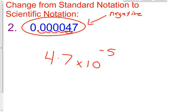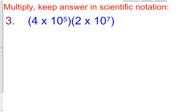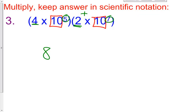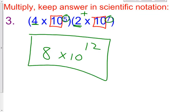Hopefully that helps for the next three problems. I have two numbers in scientific notation that I'm going to multiply by each other — this is where the product property becomes valuable. I have a common base of 10 and a base of 10. When we multiply with common bases, we add their exponents: 5 plus 7. We multiply the coefficients — 4 times 2 equals 8 — then add exponents, giving us 8 times 10 to the 12th.